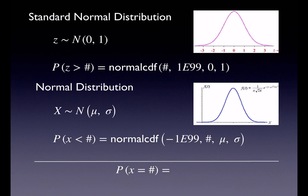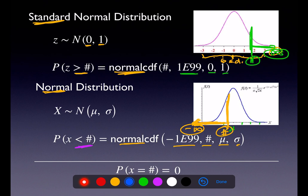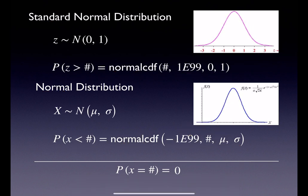Now, what if I gave you the probability that X is exactly equal to a number — not less than, less than or equal to, greater than or equal to, just exactly equal to? The answer is zero, because the probability of being exactly one number has no width. There's no base, so that probability will always be zero.